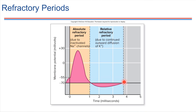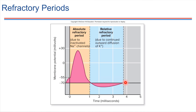Beyond the absolute refractory period, there's also what we call a relative refractory period, shown in blue on the graph. During this time, the sodium channels have reset and are ready to go again, but the cell is in a hyperpolarized state. So even if we apply the same stimulus, it's not quite enough to reach threshold. The fact that the cell is hyperpolarized means it's harder to initiate an action potential — it takes a larger stimulus to reach the threshold potential of minus 55. It's not that the cell is incapable; it just takes something stronger to trigger another action potential during that time.